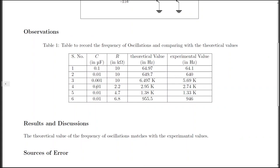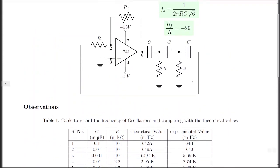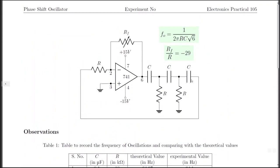If we fix the capacitance to 0.01 μF, we can also change the value of R and observe various frequencies of oscillation. We can achieve the desired frequency of oscillation by choosing suitable values of C and R. In this presentation, we have seen that we can make a phase shift oscillator on a breadboard using a 741 op-amp, and we can simulate the result through Multisim as well. Thanks for watching.